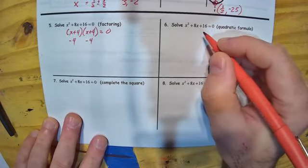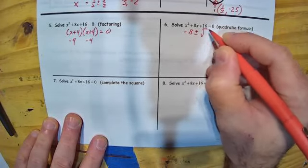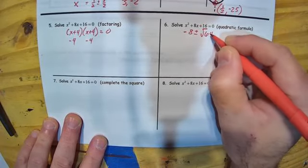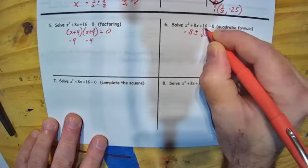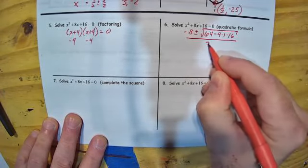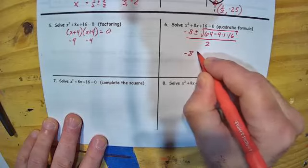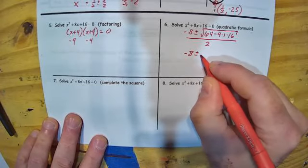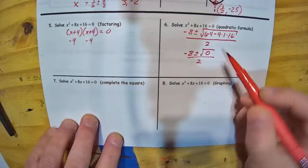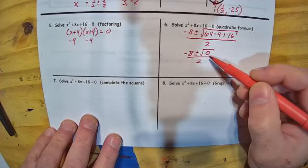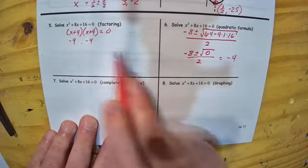If we use the quadratic formula, we're going to have negative 8 plus or minus the square root of 64 — that's b squared, or 8 squared — minus 4 times 1 times 16, all under that square root, over 2a, but a in this case is just 1. When we simplify, we get negative 8 plus or minus the square root of 0, over 2. This plus or minus 0 does nothing, so it's just negative 8 over 2, giving us negative 4 — the same solution we got from factoring.